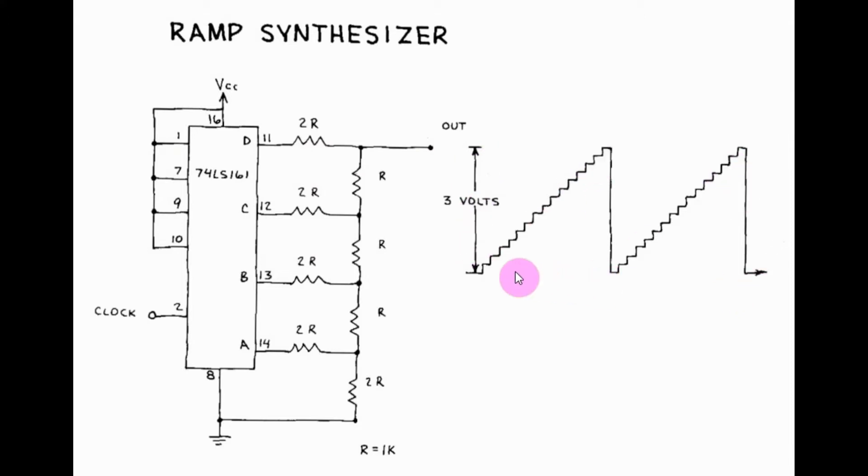The frequency of the RAMP waveform is 1 over 16 of the frequency of the input clock signal.